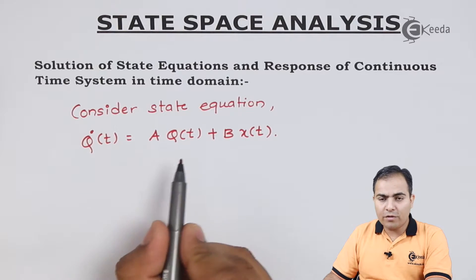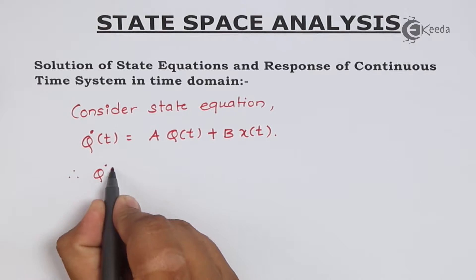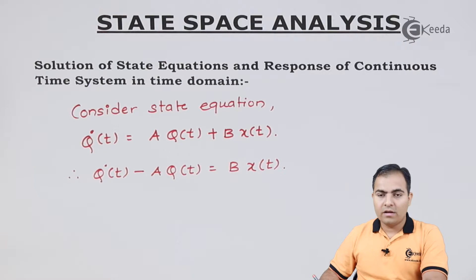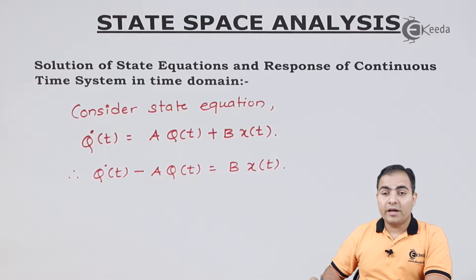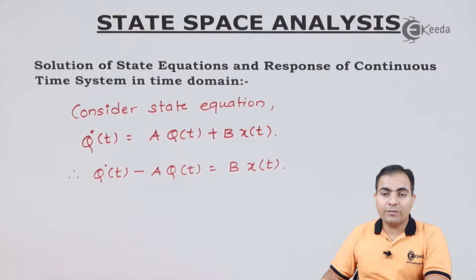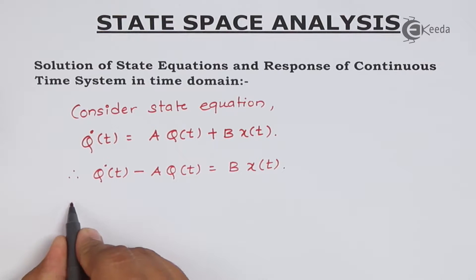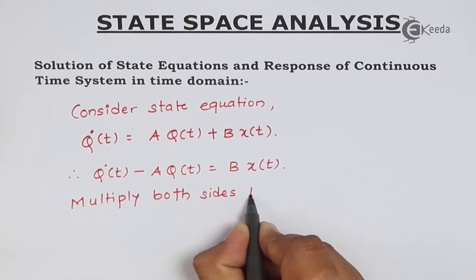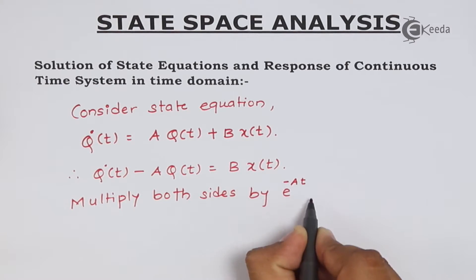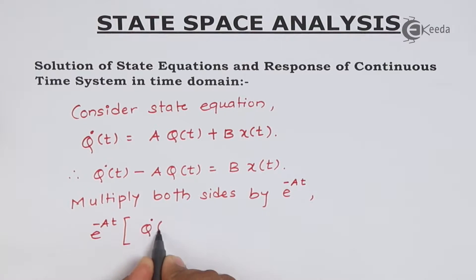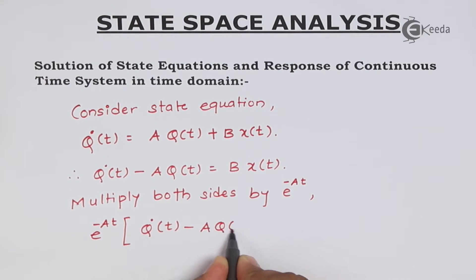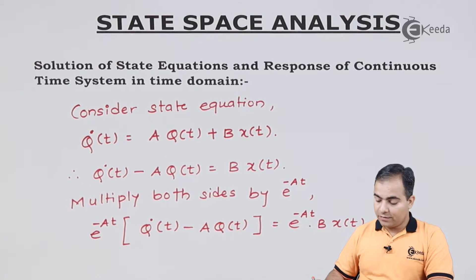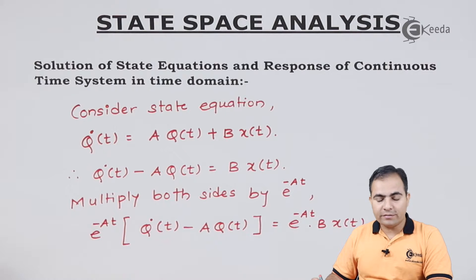Now I will shift this Aq(t) to the left hand side. And one more thing, I am going to multiply both sides by e to the power minus At. Now I will multiply e to the power minus At inside this bracket.